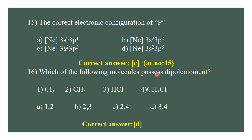Which of the following molecules possesses a dipole moment? Cl₂ is a homonuclear diatomic molecule — no dipole moment. HCl is a heteronuclear diatomic molecule — has dipole moment. CH₃Cl is a heteronuclear molecule — has dipole moment. The homonuclear diatomic molecule has zero dipole moment. The correct answer is D.